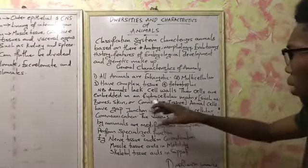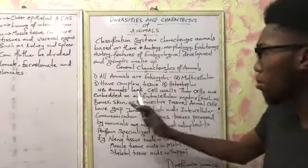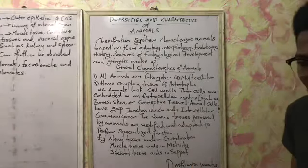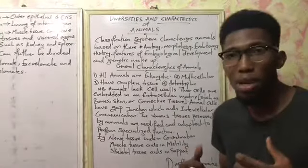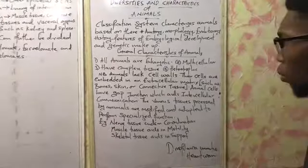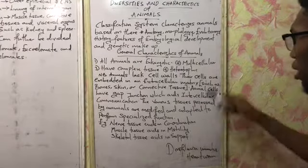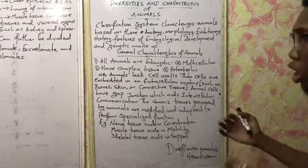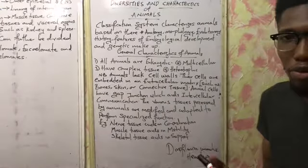Continuing with heterotrophy — we also need to know that animals lack cell walls. In their cellular build-up, they lack cell walls. What they have instead is a cell membrane. The cells are embedded in an extracellular matrix such as bones, skin, or connective tissues.